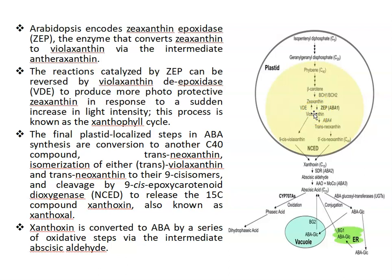The reaction catalyzed by ZEP can be reversed by violaxanthin de-epoxidase, VDE, enzyme to produce more photoprotective zeaxanthin in response to a sudden increase in light intensity, and this process is known as the xanthophyll cycle.